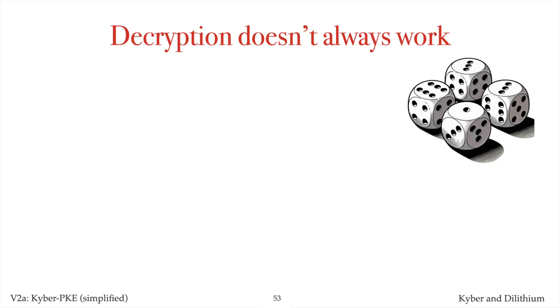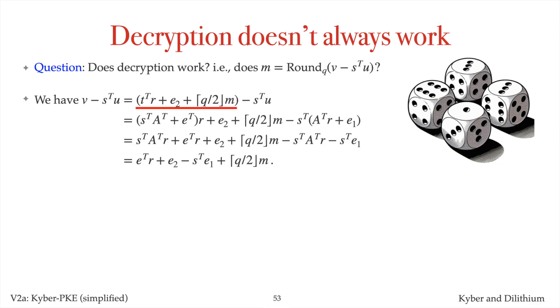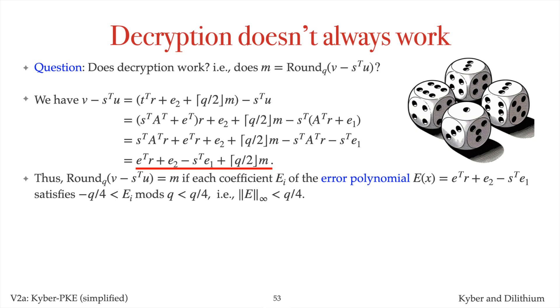Lastly, let me justify why decryption almost always works, although there is a very small probability that it doesn't. So when Alice decrypts a ciphertext C, there is a very small probability that she obtains a plaintext that is different from the one that was encrypted. We need to justify that when Alice computes the rounding of the polynomial V minus S transpose U, the resulting polynomial is equal to the plaintext M. Substituting for V, we have V minus S transpose U is equal to this expression. I then make substitutions for T and U. Expand and simplify to get this expression.